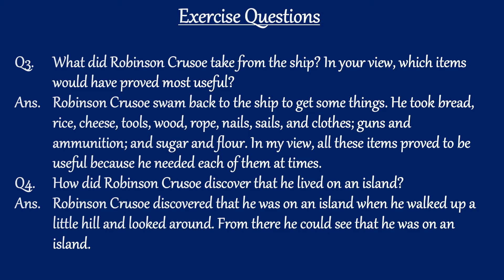Question four: How did Robinson Crusoe discover he lived on an island? Answer: Robinson Crusoe discovered that he was on an island when he walked up a little hill and looked around. From there he could see that he was on an island.